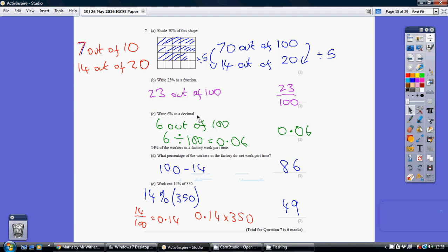write 6% as a decimal. Well, we know it means 6 out of 100. So just get your calculator out to double check. 6 divided by 100 is 0.06.